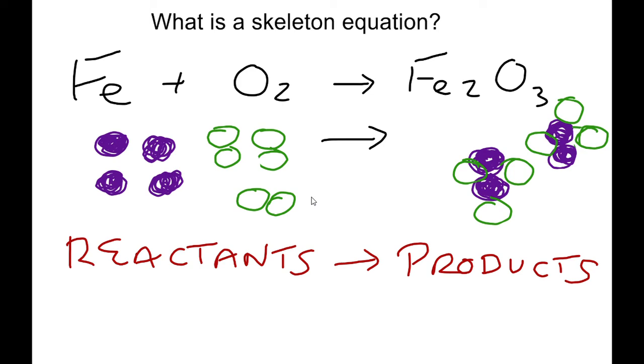Coefficients represent the number of particles of each reactant and each product that would be necessary for a chemical reaction to occur. When looking at the particle sketches below, it is clear that we would need four particles of iron or atoms of iron to combine with three molecules of oxygen.